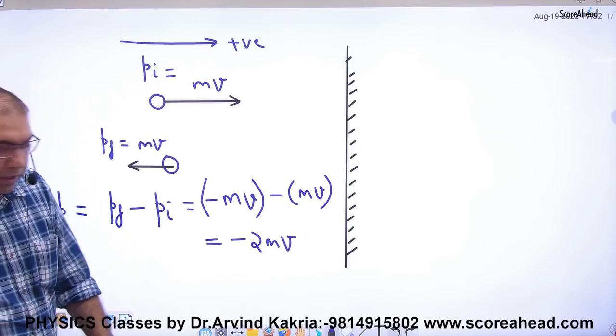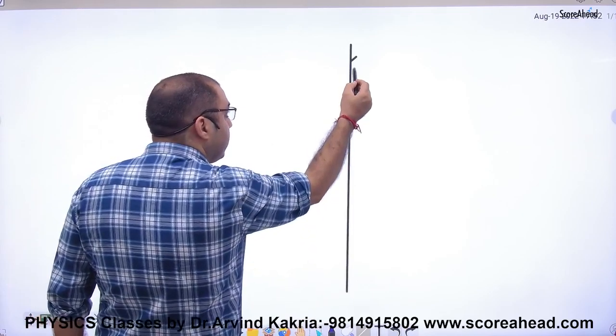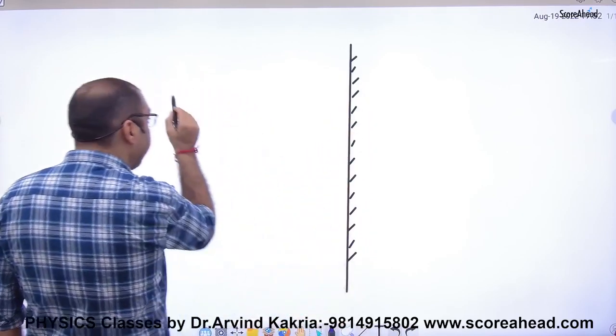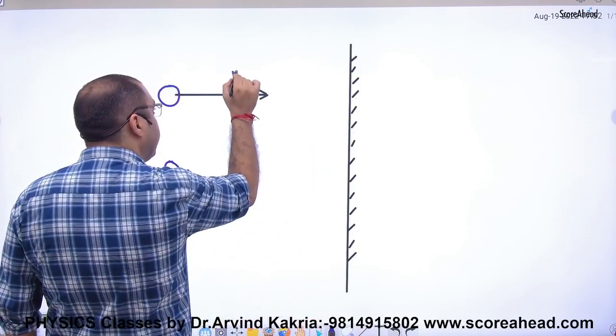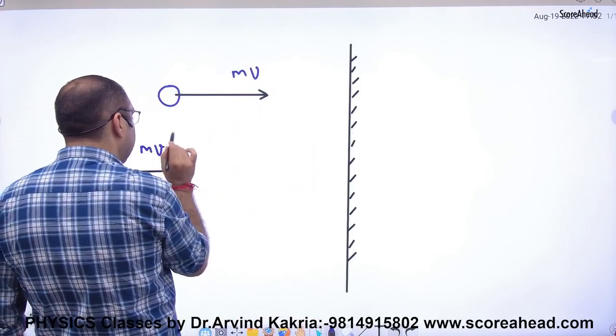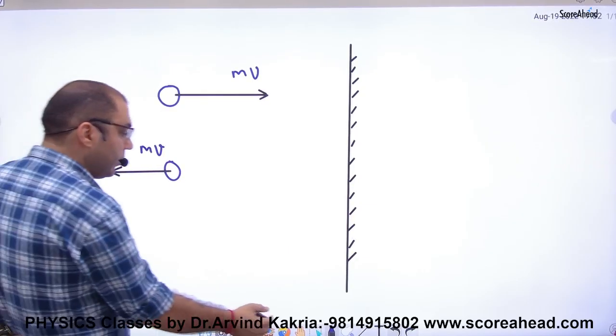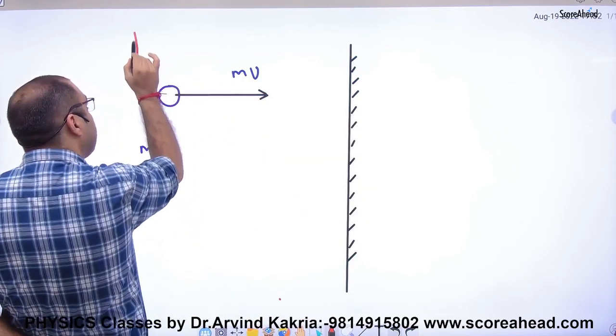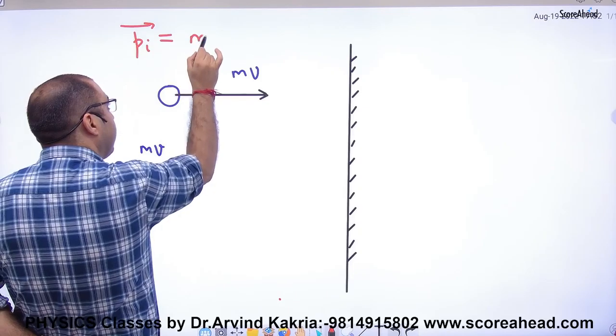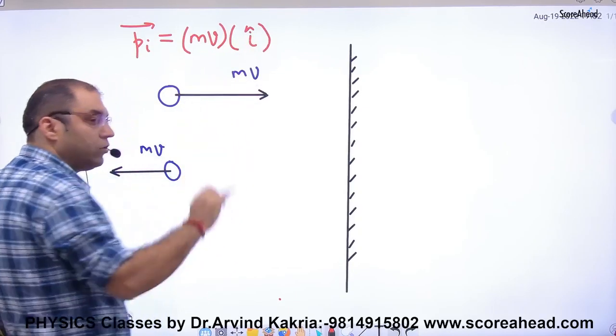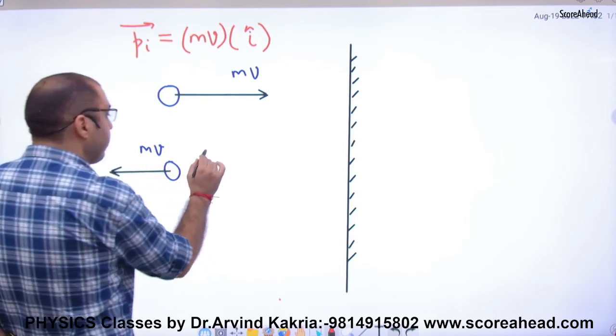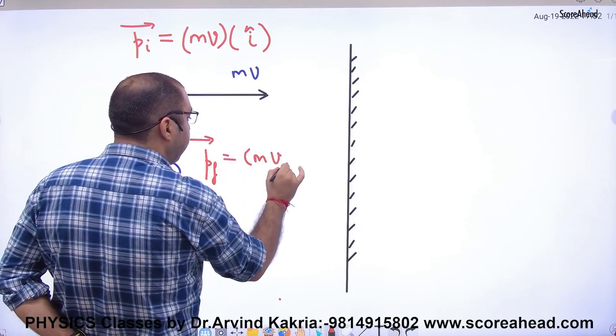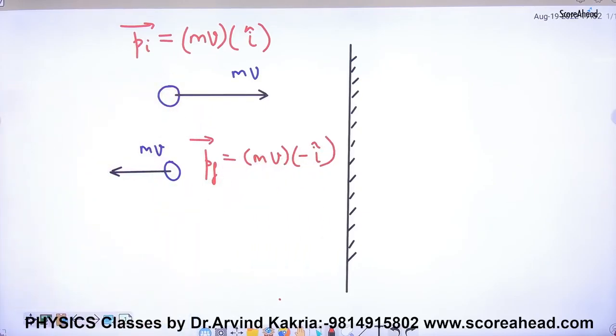Second method will be better for you. There's a wall and a ball. The ball is moving this way, then goes that way. Initial momentum is mv. Final momentum is mv. Let's take this in vector form. What is a vector? Value plus direction. The initial direction is along positive x-axis, so we write i cap. For final momentum vector: mv with minus i cap. Remember to adjust the sign with i cap or minus i cap.